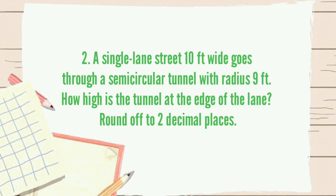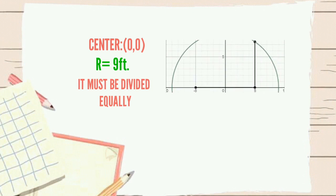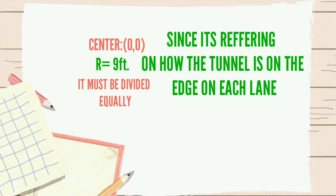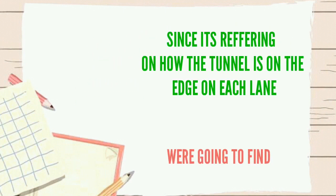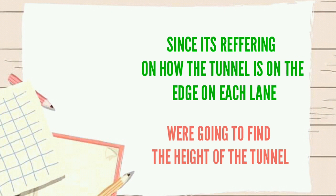In this case, we are going to use the equation of the circle because it was said that the tunnel was semicircular. Our center here is (0,0) and the radius is 9 feet. Let the 10 feet plot to the flat surface of the semicircular and it must be divided equally, 5 units to the left and 5 units to the right. Since it's referring to how high the tunnel is at the edge of each lane, we are going to find the height of the tunnel. Our x here is going to be 5.